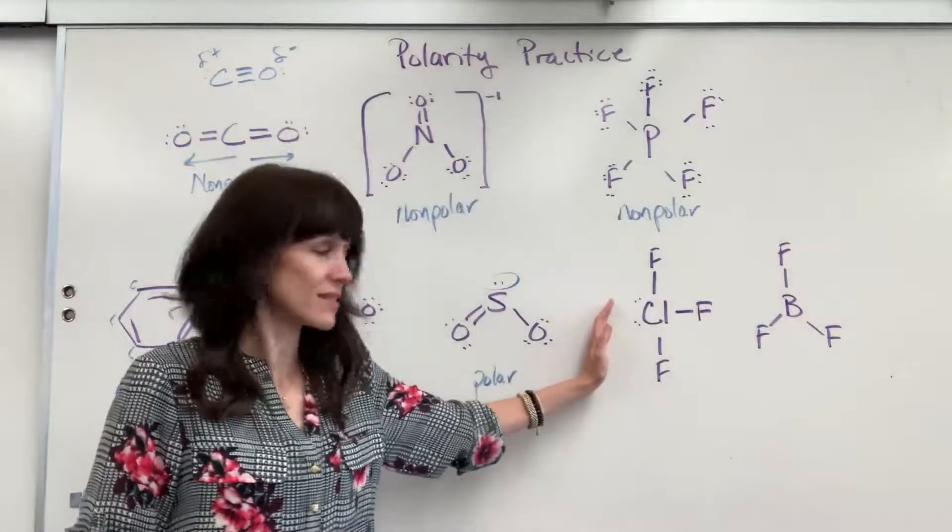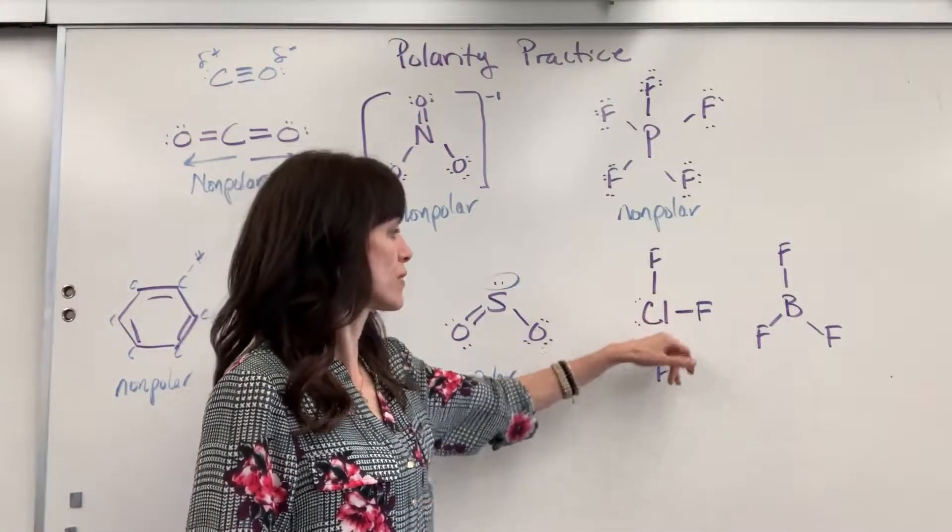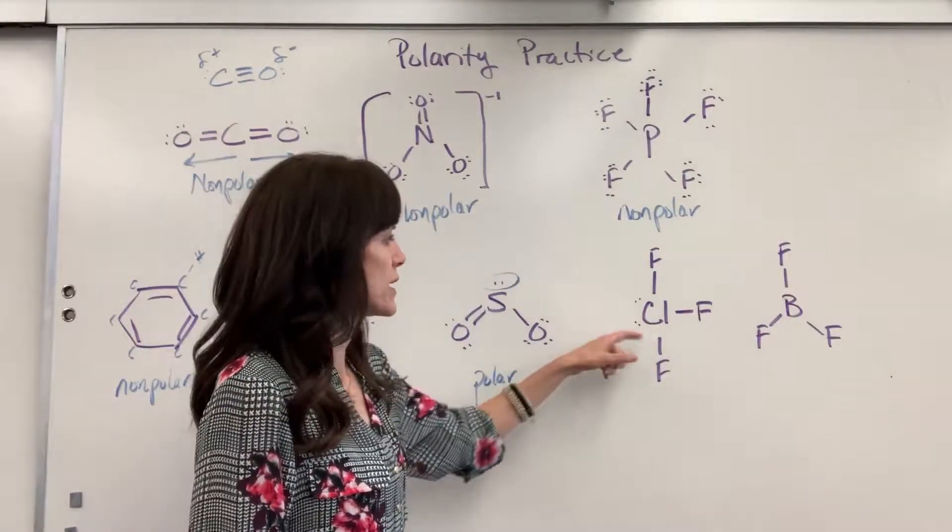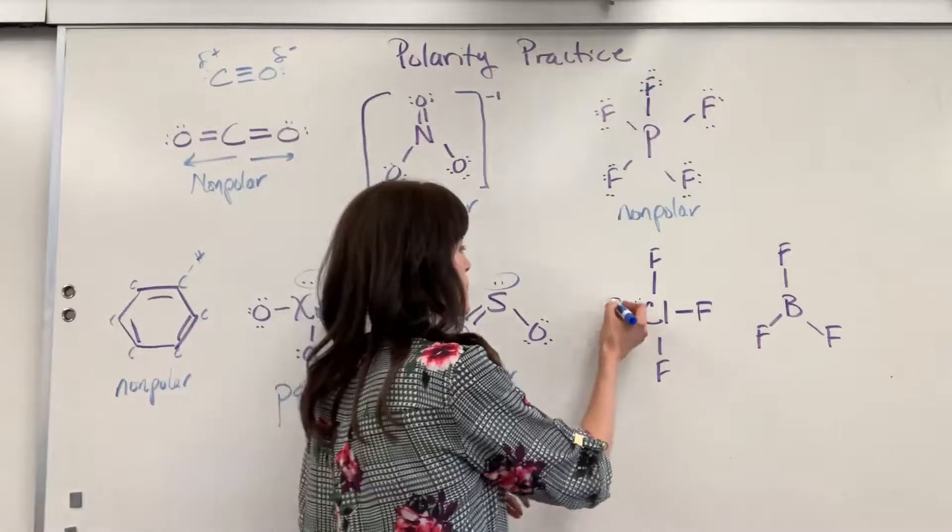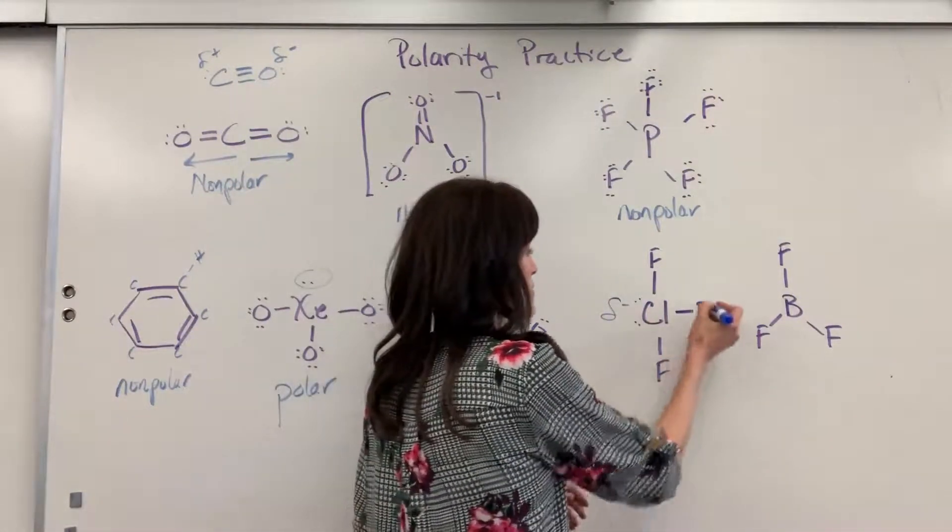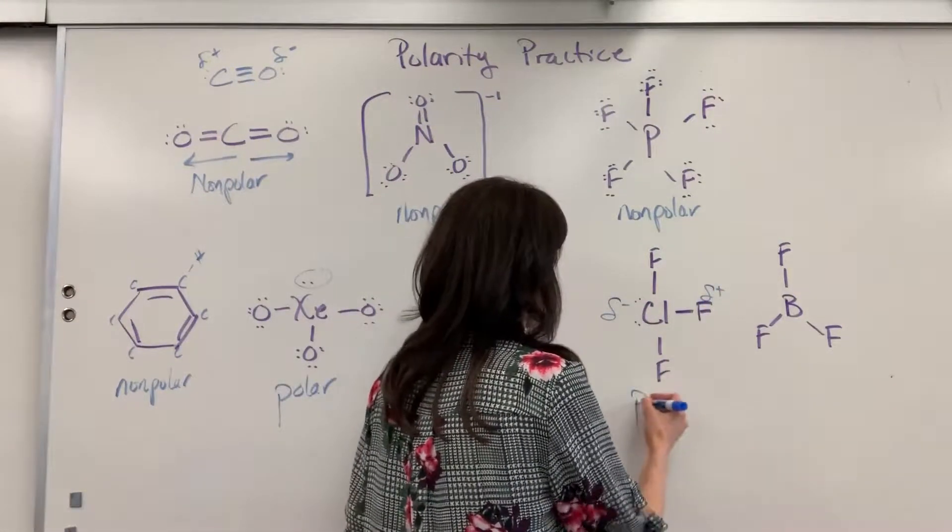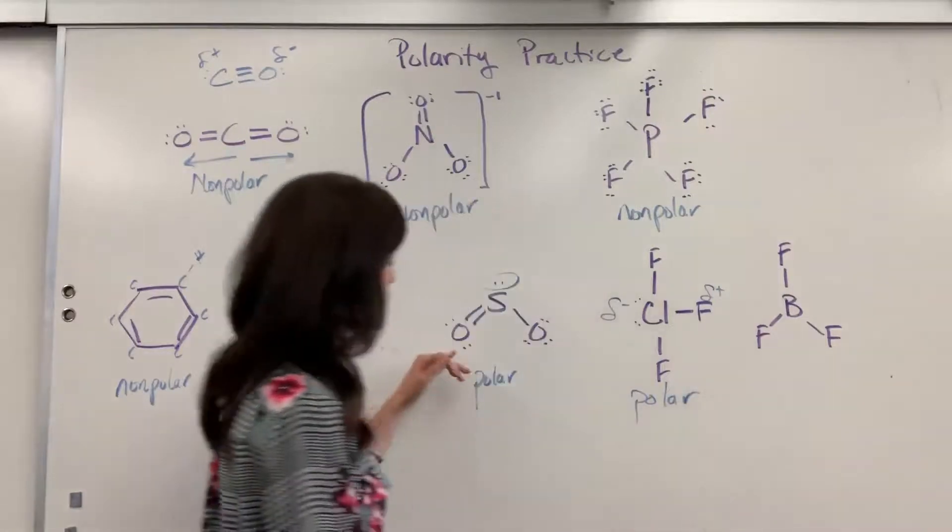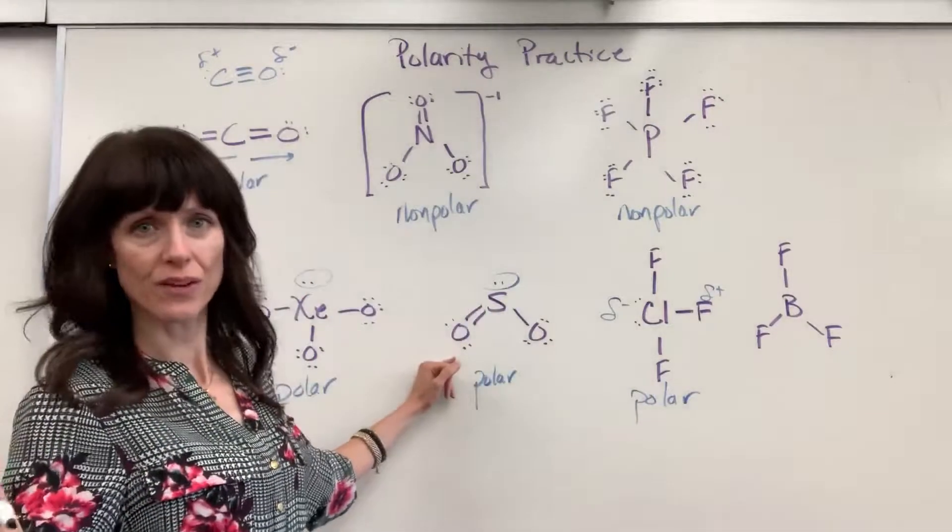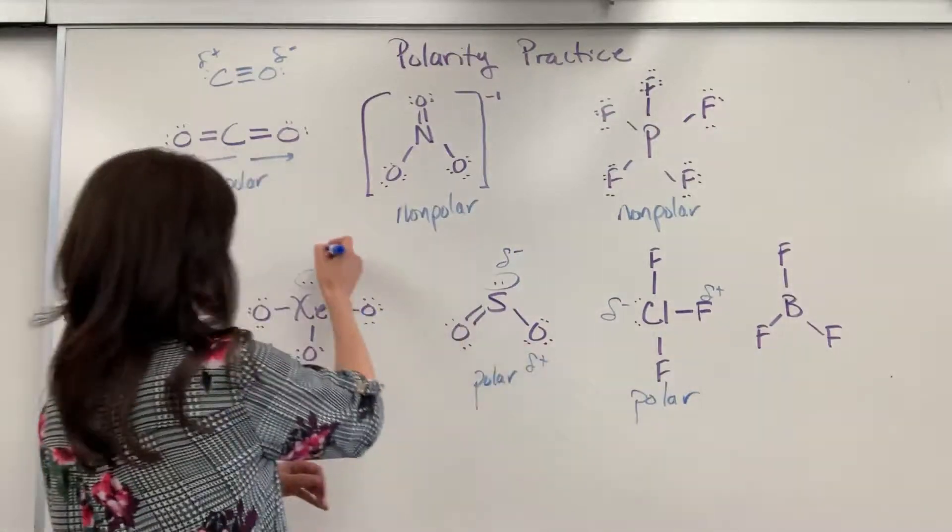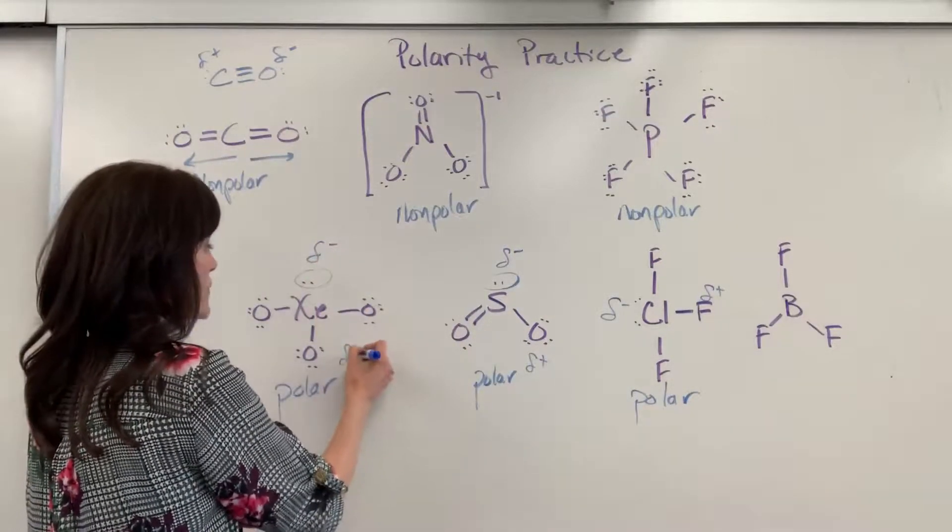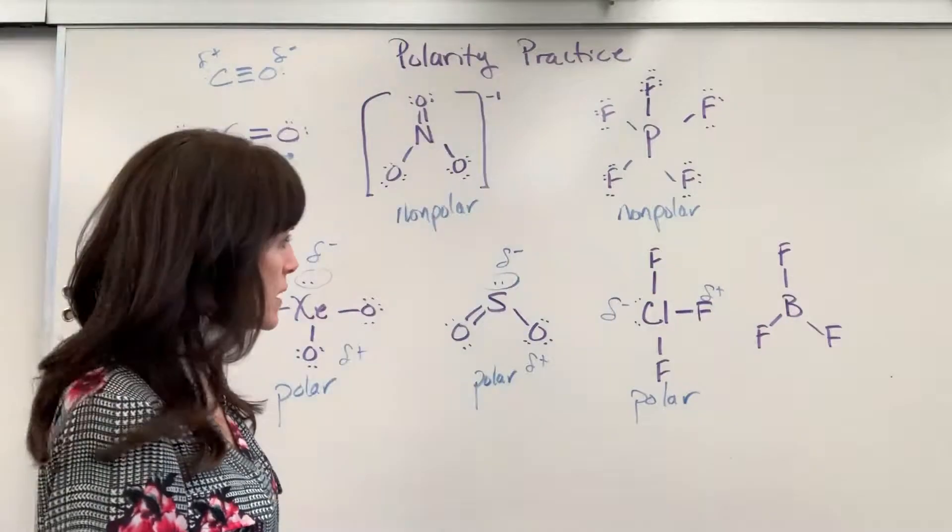Okay. T-shaped. Check this out. Five electron domains. One, two, three, four, five. Chlorine has three bonds and two lone pairs this time. We're going to have the partial negative on this side and that whole side will be the partial positive. That is going to be polar. Oh, and let me add here. Wherever you have your lone pair, that's going to be your partial negative. Everything else will be partial positive.